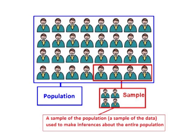A word about sample versus population. There are actually two ways of calculating the variance and standard deviation depending on whether you have a full set of data called a population, or just a sample of the data that is being used to make assumptions about the entire population. I will show both formulas.